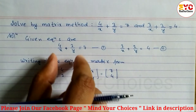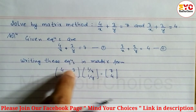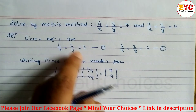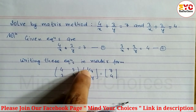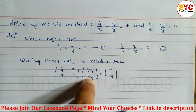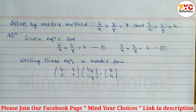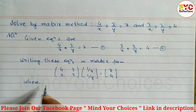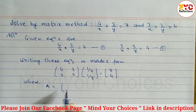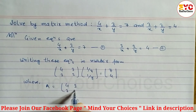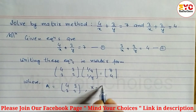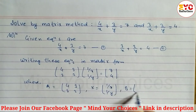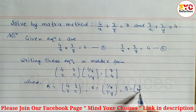When you multiply this, you will get: 4 × (1/x) + 3 × (1/y) = 7. Similarly, 3 × (1/x) + 2 × (1/y) = 4. Where A = [[4, 3], [3, 2]], x = [[1/x], [1/y]], and b = [[7], [4]].